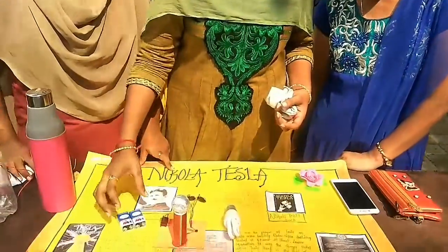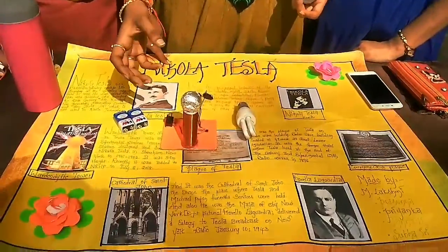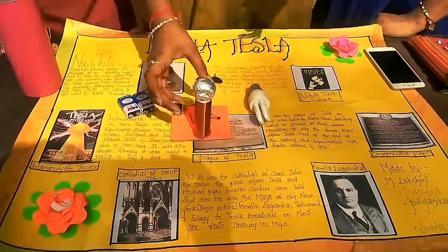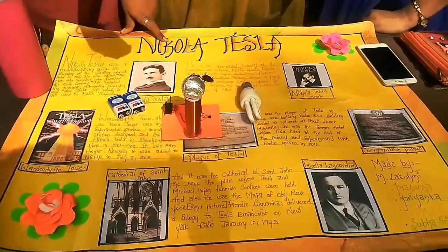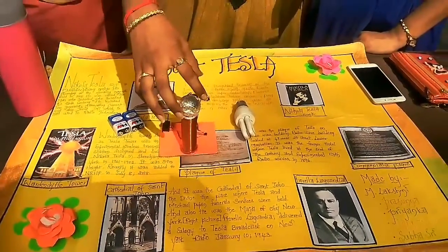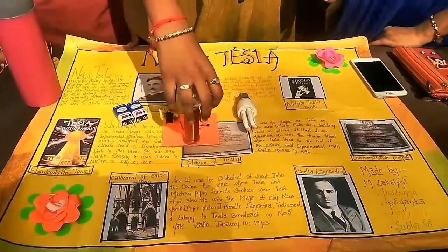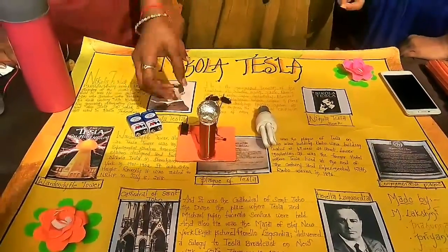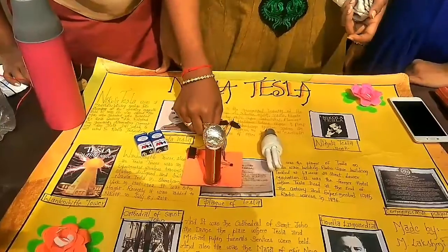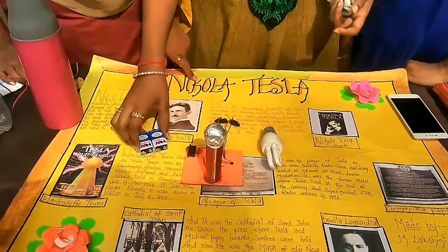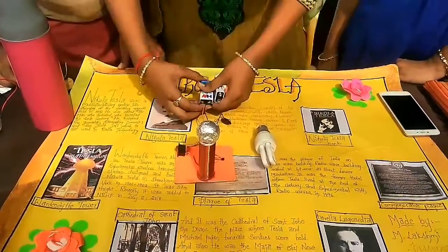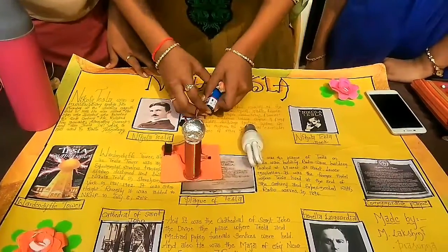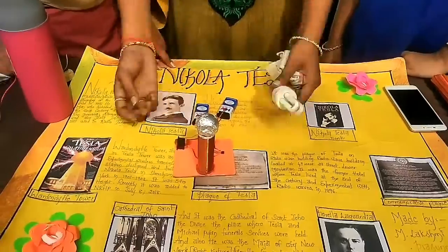We can also use batteries for making the bulb glow. First we have to take a coil, make it into a coil, and connect it to an aluminium foil on top of it. Then cut a resistor and connect it. Add batteries and make the switch on.